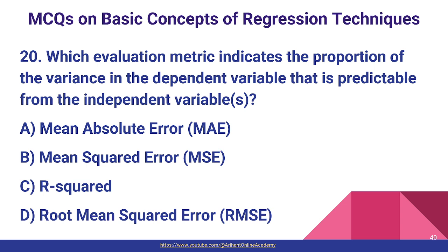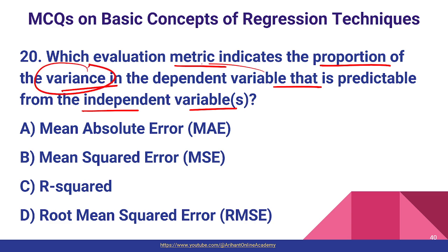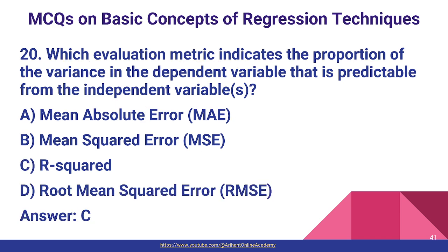Question number twenty: which evaluation metric indicates the proportion of variance in the dependent variable that is predictable from the independent variables? That is R-squared. MAE and MSE relate to absolute and average differences between actual and predicted values, whereas R-squared represents the proportion of variance in the dependent variable predictable from independent variables. So option C is the correct answer.